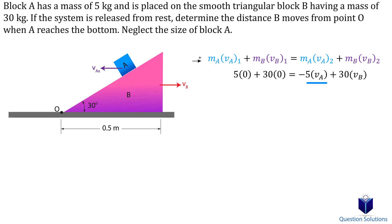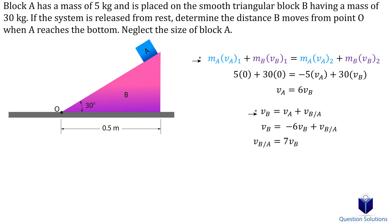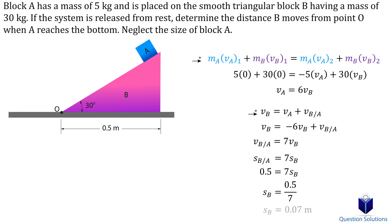On the other side, we have the mass of block A multiplied by its final velocity, plus the mass of block B multiplied by its final velocity. Since block A moves left and right is positive, we can isolate for the velocity of A. Using relative motion of two particles — considering only horizontal velocities and picking right as positive — since VA is moving to the left it is negative. Integrating velocity gives displacement. From the diagram, the relative displacement is 0.5 meters, and solving gives us 0.07 meters — the distance block B moved when block A slid down.